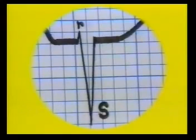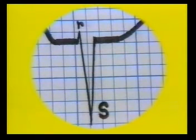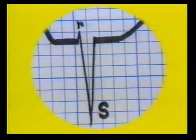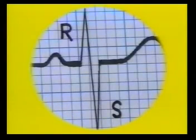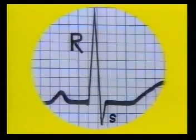Now we shall see a few QRS complexes to understand the terminology better. Here we see a small R wave and a deep S wave — an RS pattern. This is a tall R wave and a deep S wave, another RS pattern. And this is a tall R wave and a small S wave, again an RS pattern.